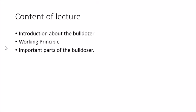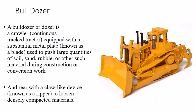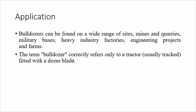The bulldozer is a kind of engineering marvel used in different kinds of engineering works. It is actually a crawler — it is called a crawler because it does not have tires; it has tracks. On the front it has a blade, which is a metal plate, and on the rear side there is a claw-like structure called the ripper. Any vehicle having a front metal plate or blade and a rear claw or ripper is called a bulldozer. Bulldozers are useful for mines, military bases, heavy industries, engineering projects, and farms.